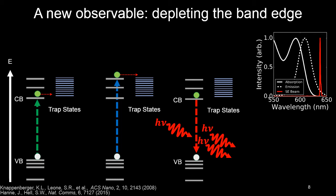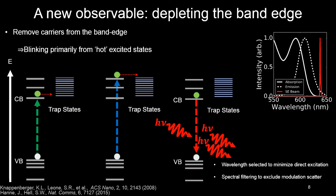Here on the top right I show you the absorption and emission spectra, and then in red the spectrum of the beam I chose to deplete the band edge carriers, with the hope that any blinking we see will comment on the contributions from hot carriers, because in literature hot carriers have been shown to make blinking worse. We chose a wavelength to minimize direct excitation of the dot, and hopefully we're able to look at the photons coming from the dot without too much laser scatter.